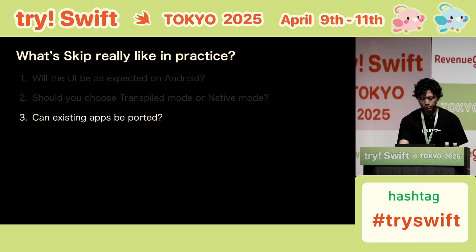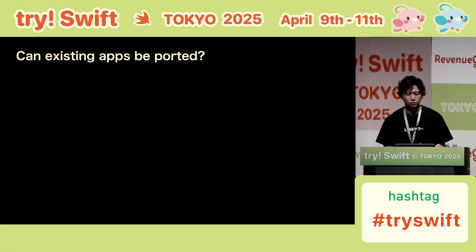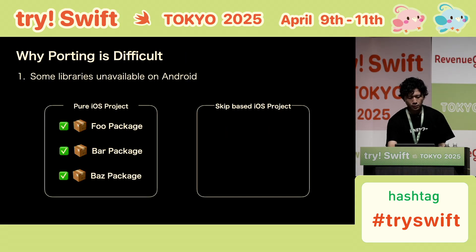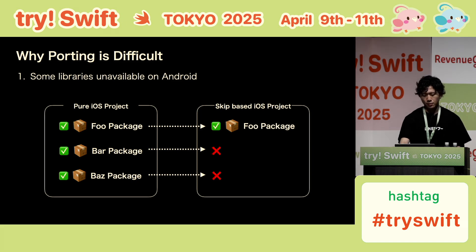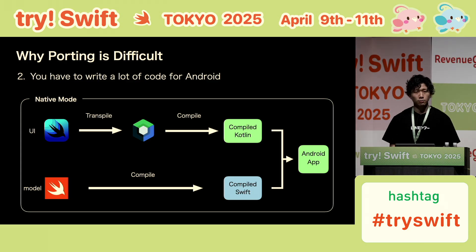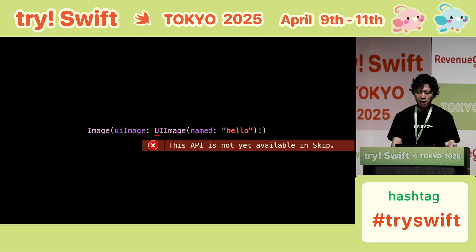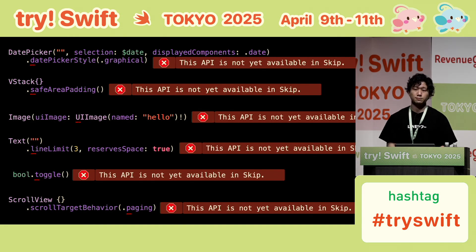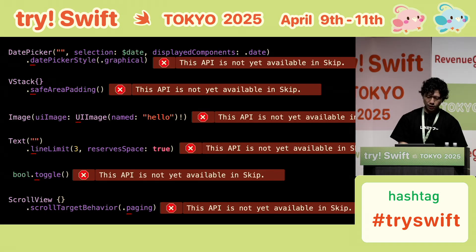Next, can an existing app be ported? Based on my experience trying to port my app, the answer is not impossible, but it's very challenging. In fact, I gave up on porting my app. There are two reasons. First, some libraries you use are still not supported on Android. Second, you have to write a lot of code for Android. Even in native mode, SwiftUI code is transpiled, but some APIs cannot be transpiled and will result in an error. Therefore, you have to write a lot of code for Android, and that is very hard work.